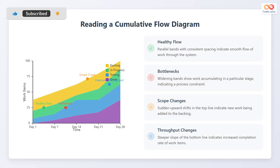Let's learn how to read a cumulative flow diagram. Parallel bands with consistent spacing indicate smooth flow of work through the system. Widening bands show work accumulating in a particular stage, indicating a process constraint. Sudden upward shifts in the top line indicate new work being added to the backlog. A steeper slope of the bottom line indicates an increased completion rate of work items.